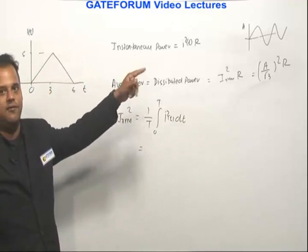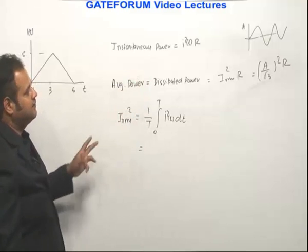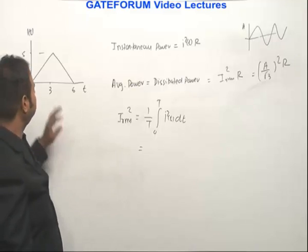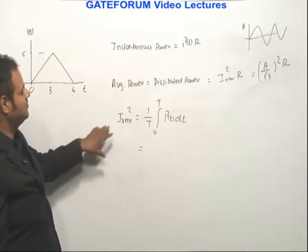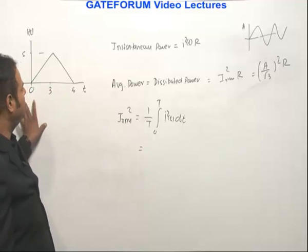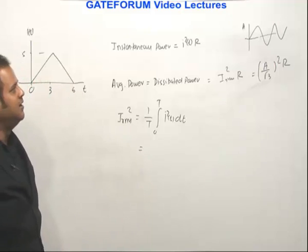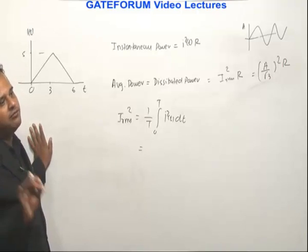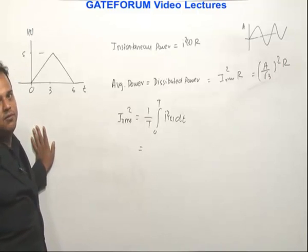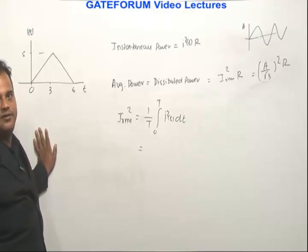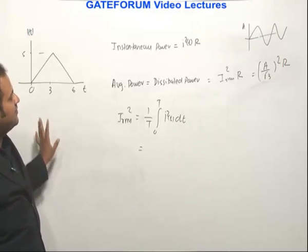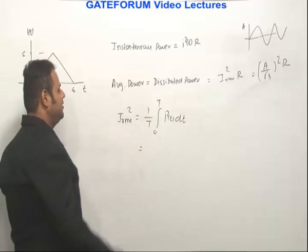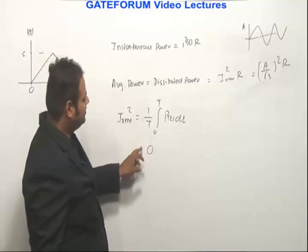If you use this formula for a periodic triangular waveform, the standard result is A/√3. But we are not using that here. If you ask what is the time period of this waveform, it is a non-periodic waveform. However, every non-periodic waveform can be regarded as a periodic waveform with period infinity — that is what we use Fourier transforms for.